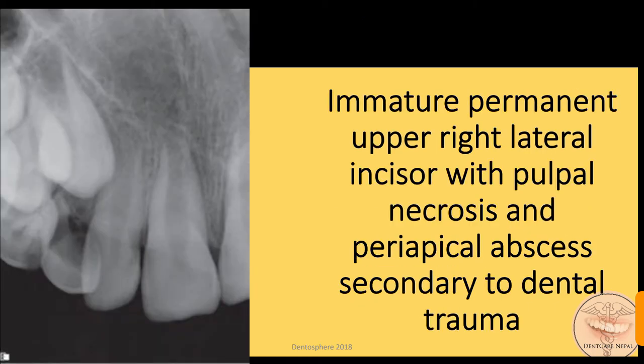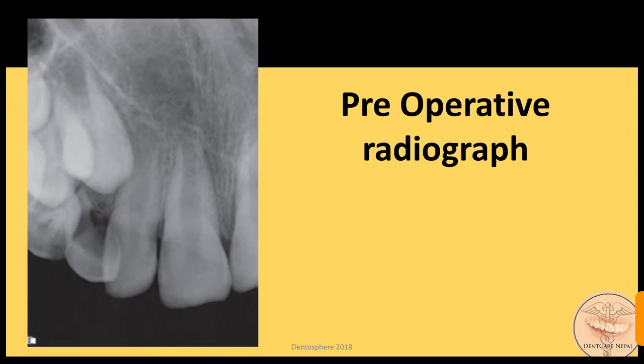For case selection: an immature permanent upper right lateral incisor with pulpal necrosis and periapical abscess secondary to dental trauma is an ideal case for revascularization. Here is the pre-operative radiograph of the tooth, which shows a wide open apex and short developing root of the lateral incisor.